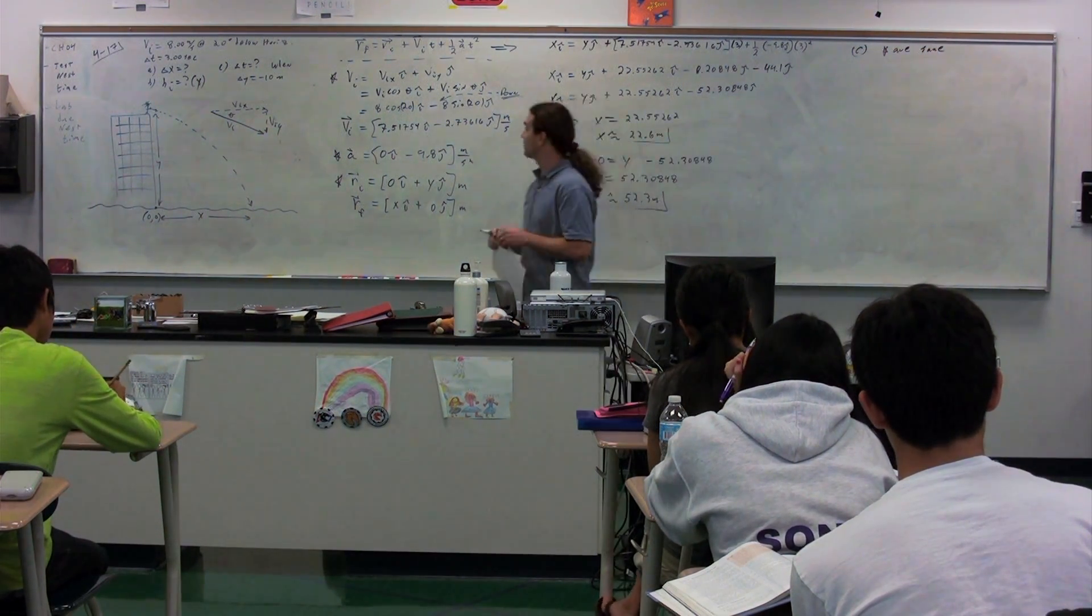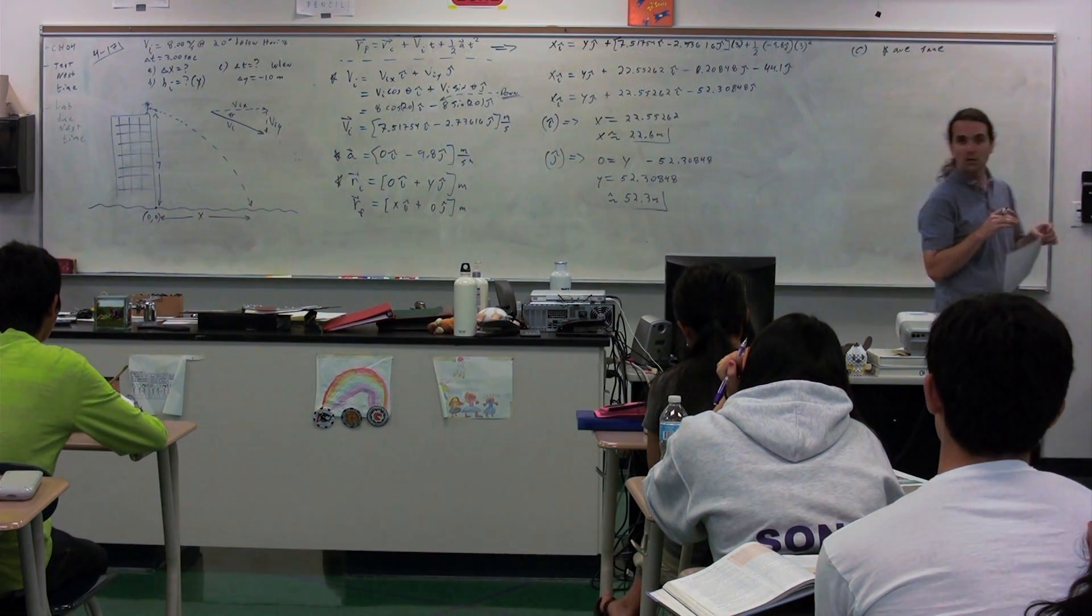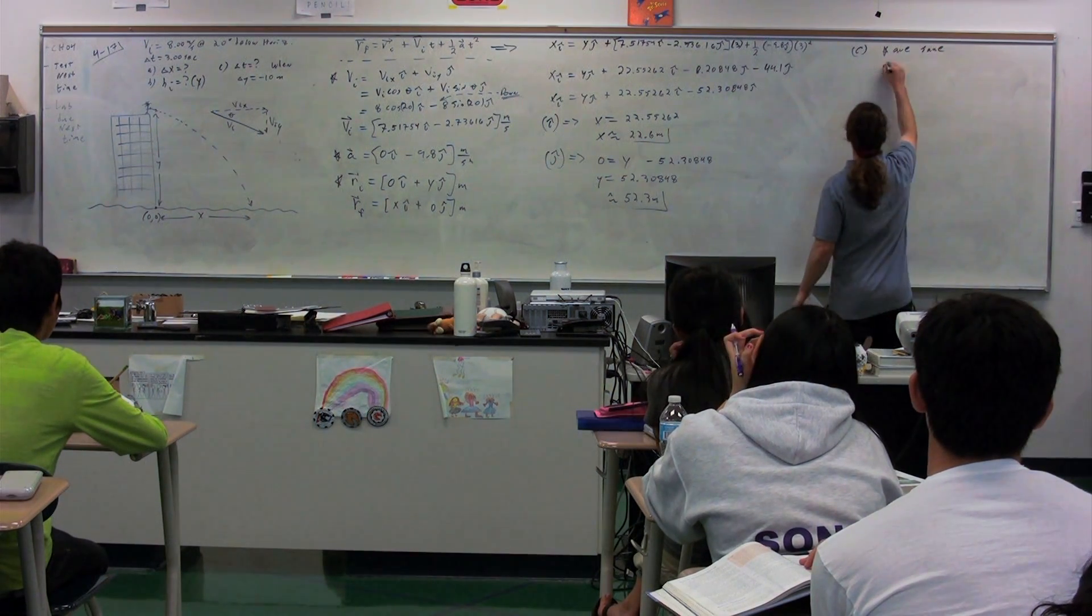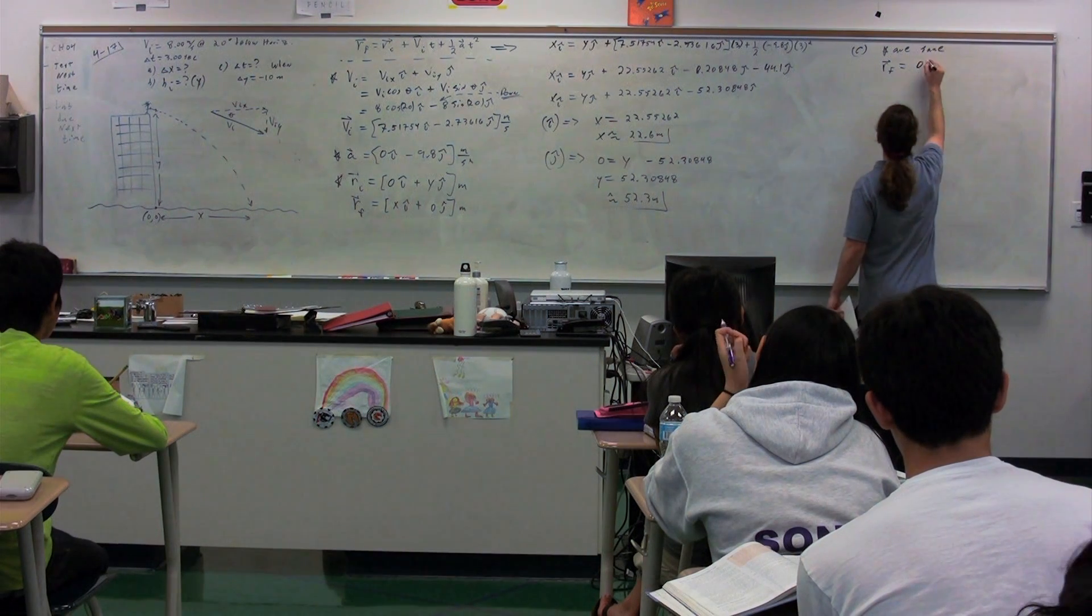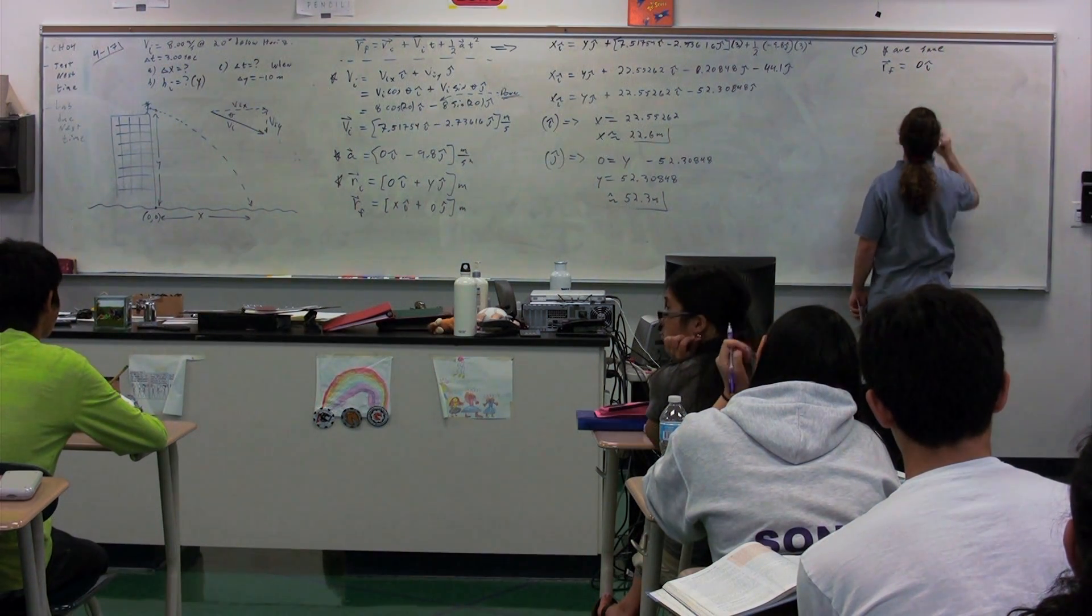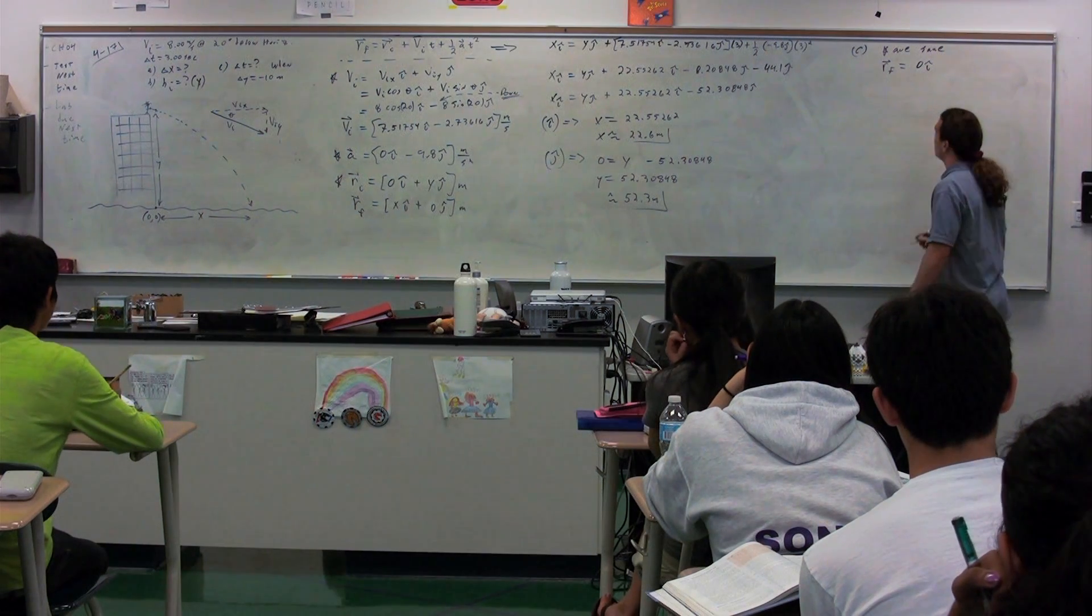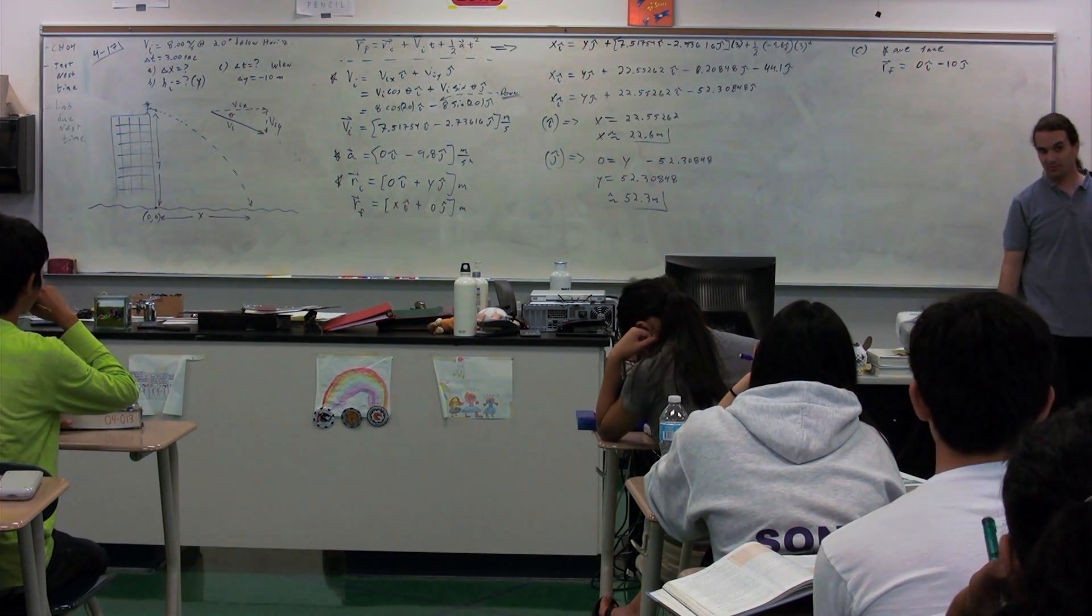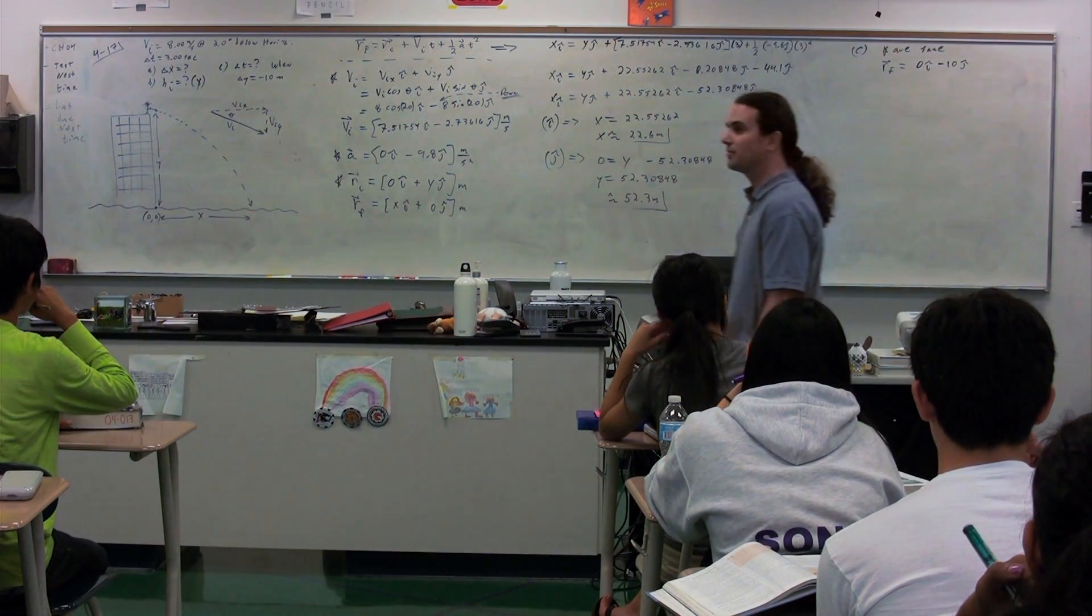What's different? Rebecca? Position final. Okay. What is the position final? 0i and negative 10j. It's not negative 10j. What is the y-value final?